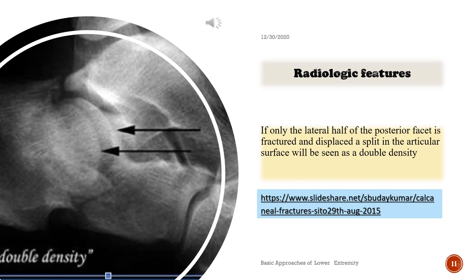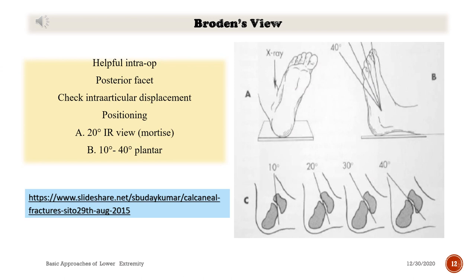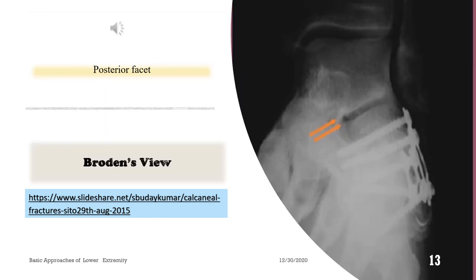Radiologic features: if only the lateral half of the posterior facet is fractured and displaced, a split in the articular surface will be seen as a double density. Notice the radiograph. The Broden view is helpful intraoperatively for visualizing the posterior facet and checking intraarticular displacement. Positioning: 20 degrees internal rotation, mortise view, 10 degrees, 40 degrees, plantarflexed. Red arrows show the posterior facet.